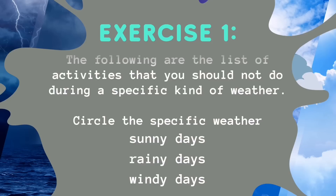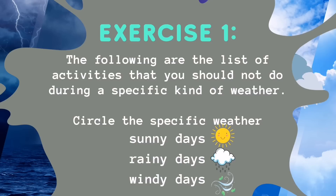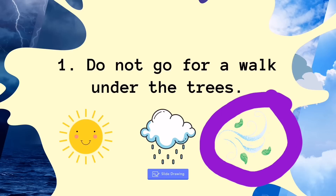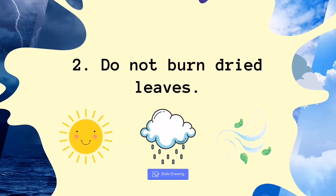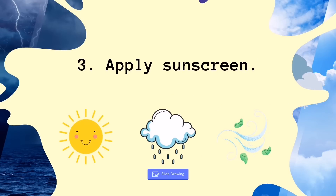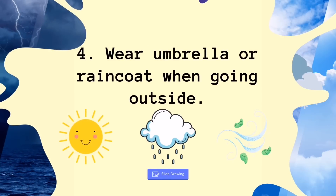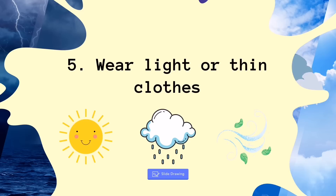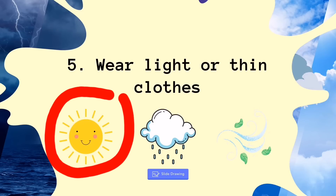Now let's have Exercise 1. The following are activities that you should not do during a specific kind of weather — circle the specific weather: sunny days, rainy days, or windy days. Number 1: Do not go for a walk under the trees — answer: windy day. Number 2: Do not burn dry leaves — answer: windy days. Number 3: Apply sunscreen — answer: sunny day. Number 4: Wear an umbrella or raincoat when going outside — answer: rainy day. Number 5: Wear light or thin clothes — answer: sunny day.